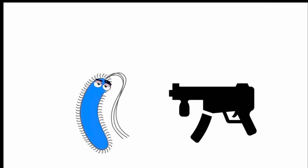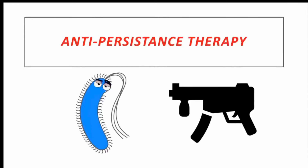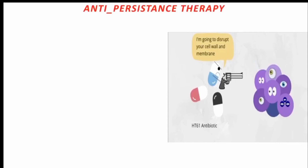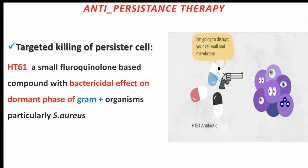Although those annoying cells survive and repopulate, we will never surrender. I am Zahra Akram and I came up with the weapons — anti-persistence therapy. First, we have drugs that act by targeting persister cells and killing them directly. For example, ST61 antibiotic, a small fluoroquinolone-based compound with bactericidal effect on the dormant phase of gram-positive organisms, particularly Staph aureus. As seen in the figure, gram-positive Staph aureus bacteria are targeted by ST61 antibiotics, which try to disrupt their cell wall and membrane.